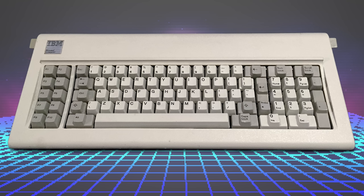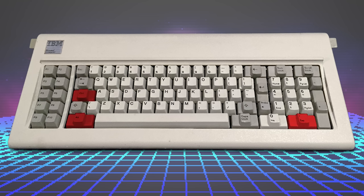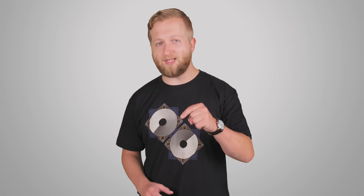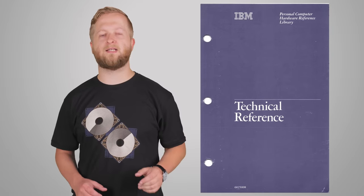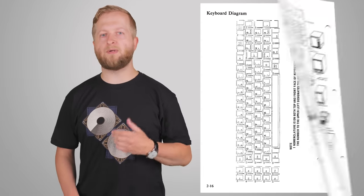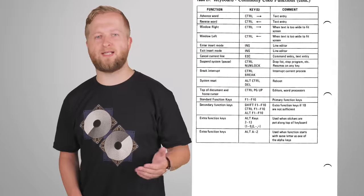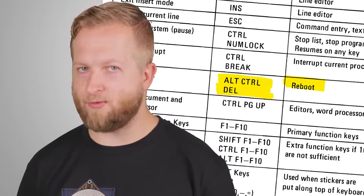At first, Control-Alt-Escape was proposed, but all three of those keys are on the same side of the keyboard, so it was thought that combo would still be too easy to trigger by mistake. So instead, Delete was assigned to be the third key. Funnily enough, even though Control-Alt-Delete persists as a standard key shortcut to this day, it was originally intended just for development use, but was leaked to the public after it was included in some IBM reference documents.